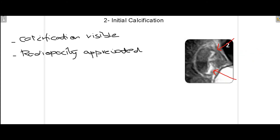At stage 2 you can see radio-opacities on the radiograph, which tells us that calcification of the forming tooth has now started. Radiographically you can appreciate this by seeing the radio-opacities marked by the arrows.